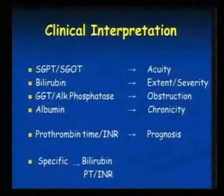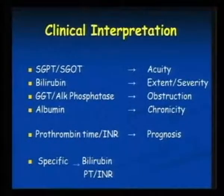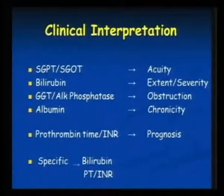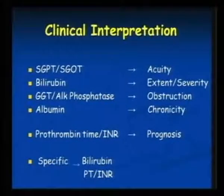Coming to albumin — half-life is 21 days, so it indicates chronicity. That means you should have liver involvement, acute or chronic or diffuse, for more than three weeks. Otherwise, in an acute condition, we may see low albumin in a child who is already undernourished — that is different. But in a normal host, you need chronicity. If albumin is down, that tells you about the chronicity of liver disease.